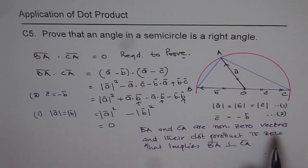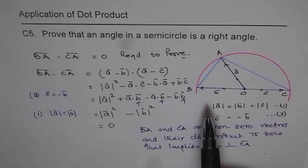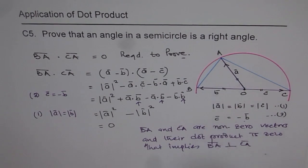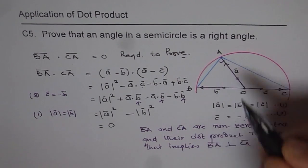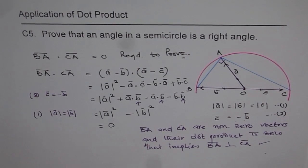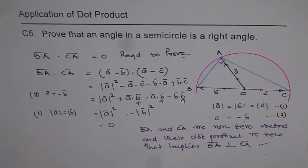And that shows that in a semicircle the angle formed is always 90 degrees. Do you see that? That is what it shows. So we proved that angle in a semicircle is always a right angle.